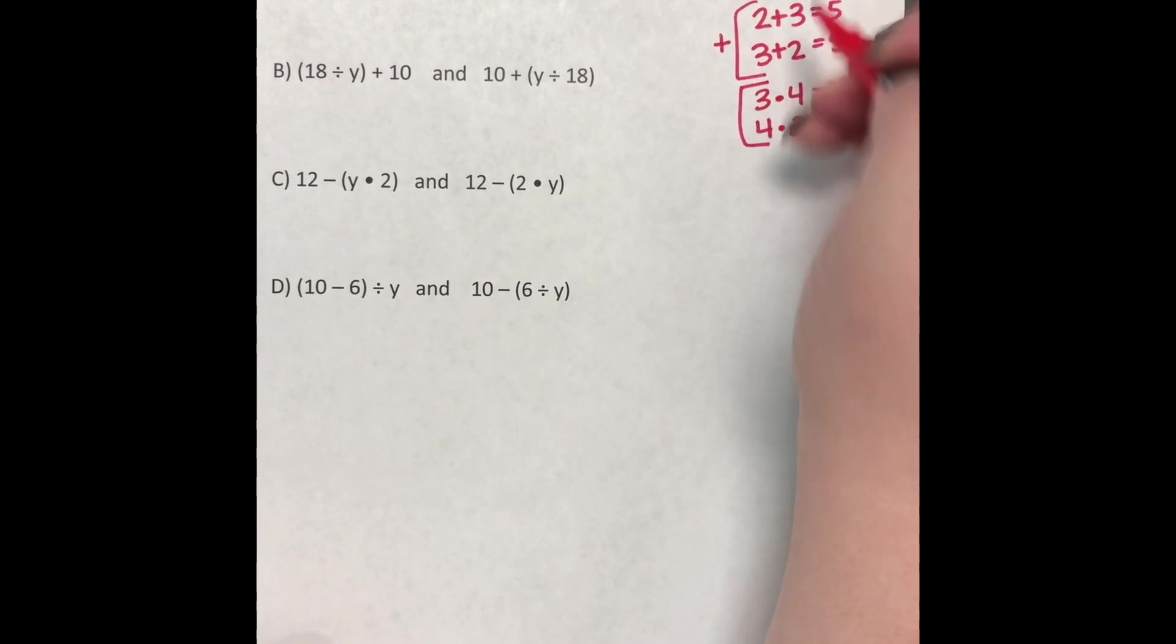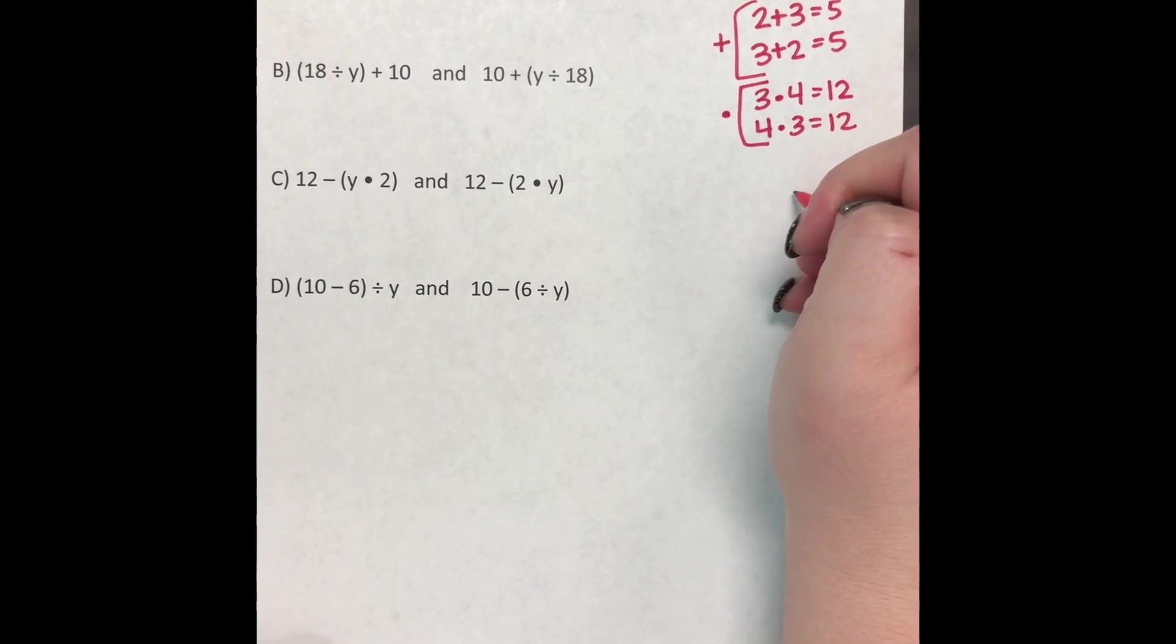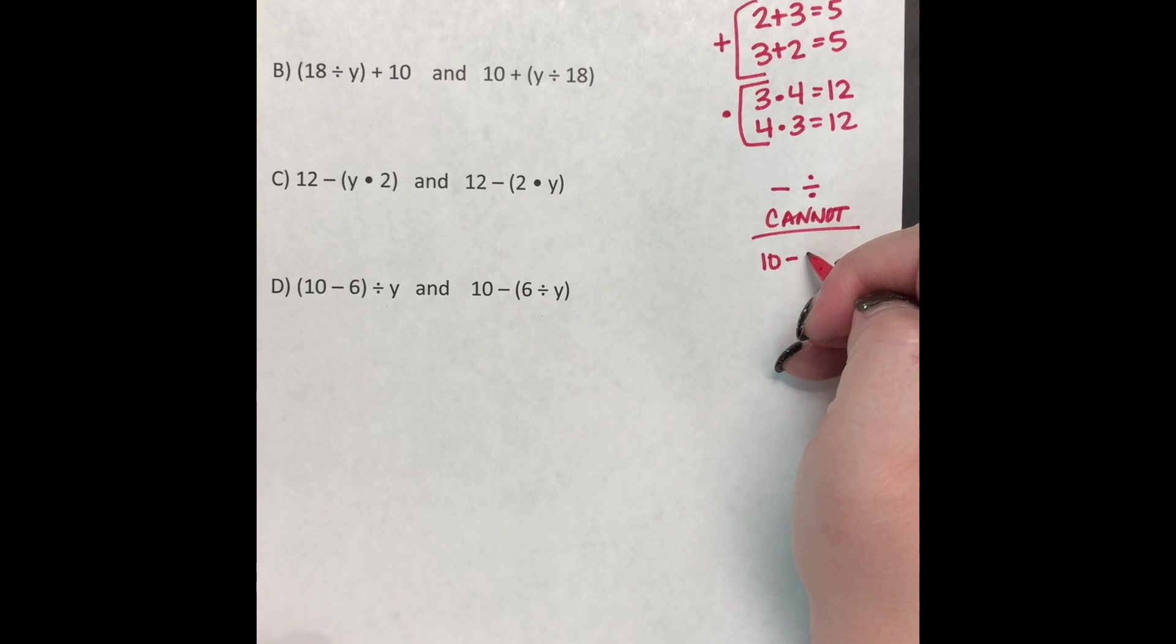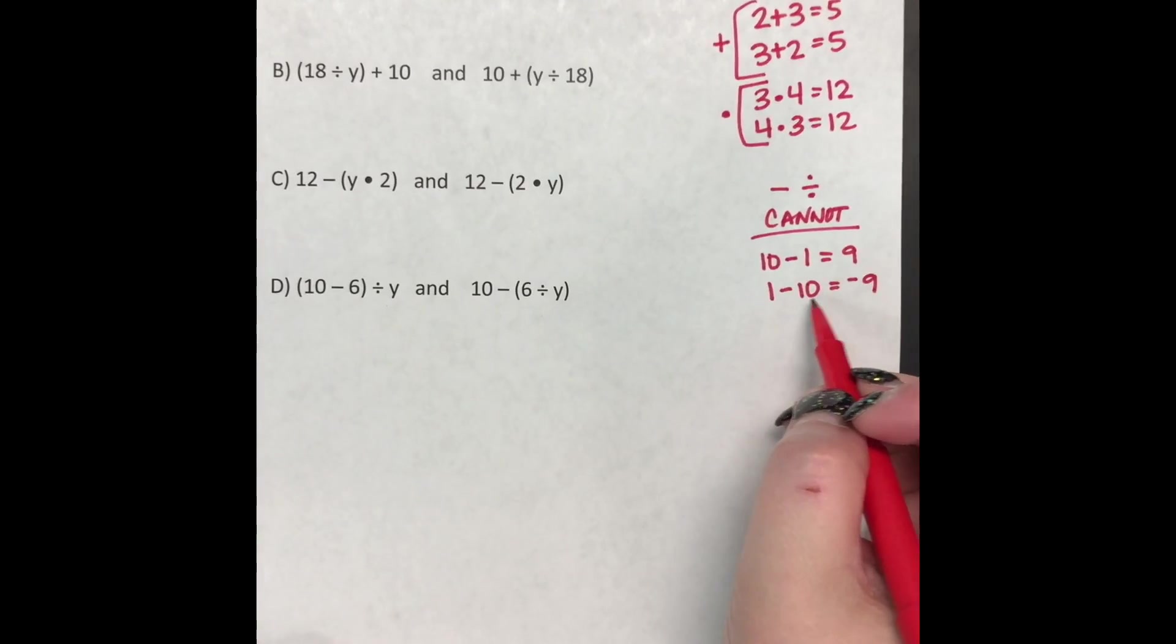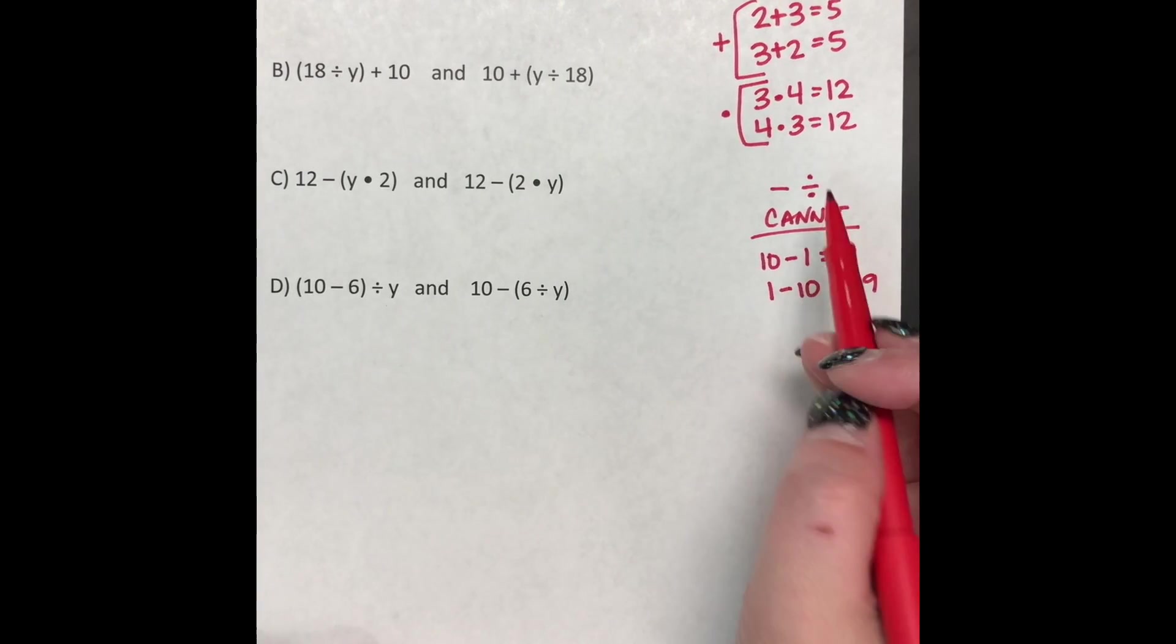So addition can be reversed and multiplication can be reversed. You notice that when you subtract or divide, those cannot, and I'm going to show you what I mean. So in this case, let's do 10 minus 1. 10 minus 1 is 9, but if I do 1 minus 10, that equals negative 9 because I can't take a larger number from a smaller number without getting a negative. So these will not come out the same. They are not reversible, subtraction and division.